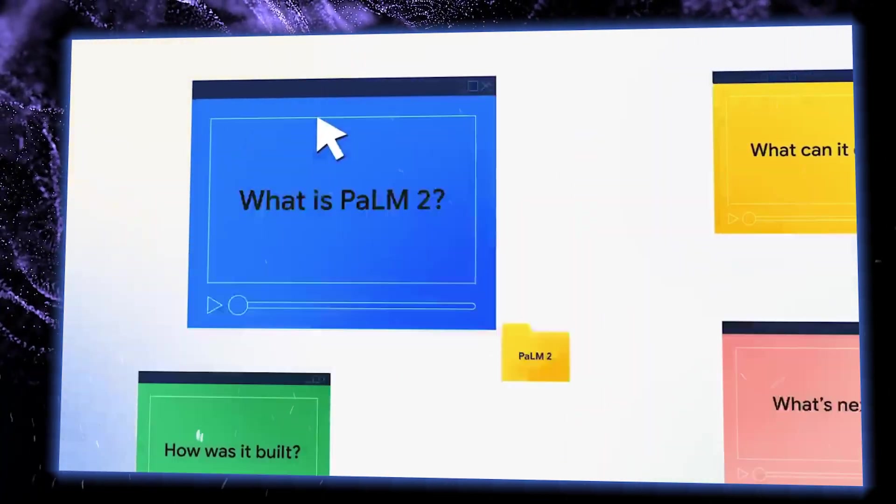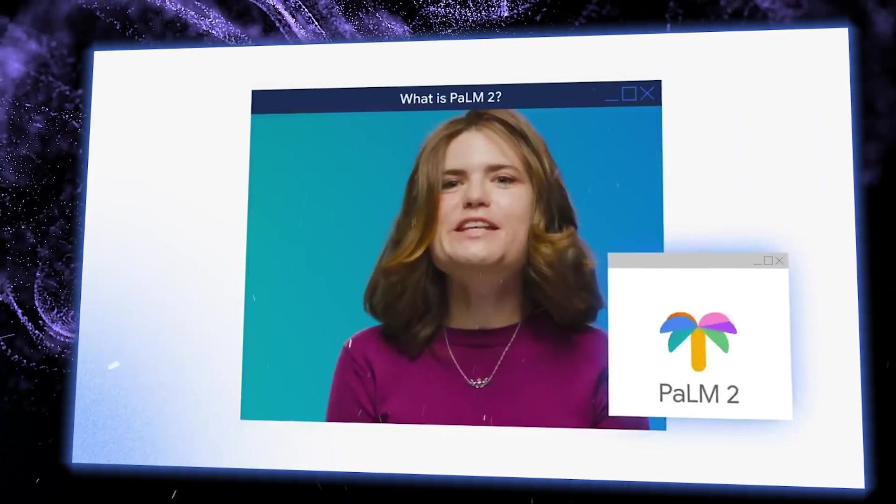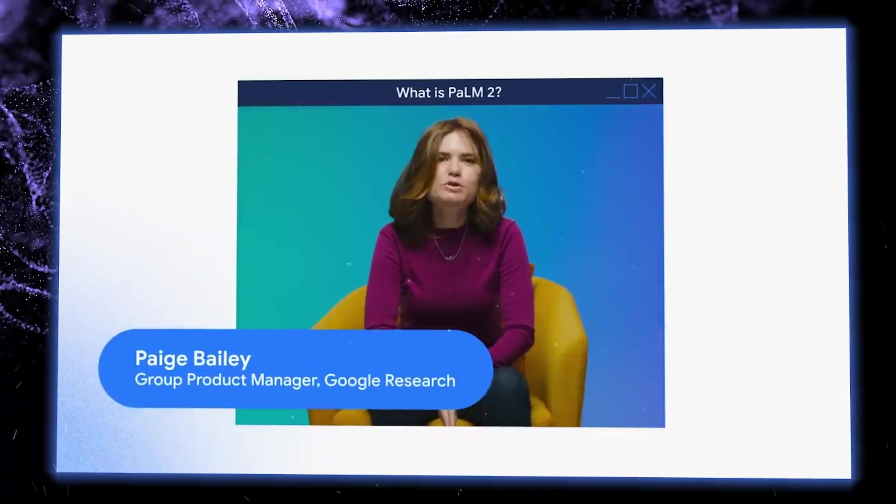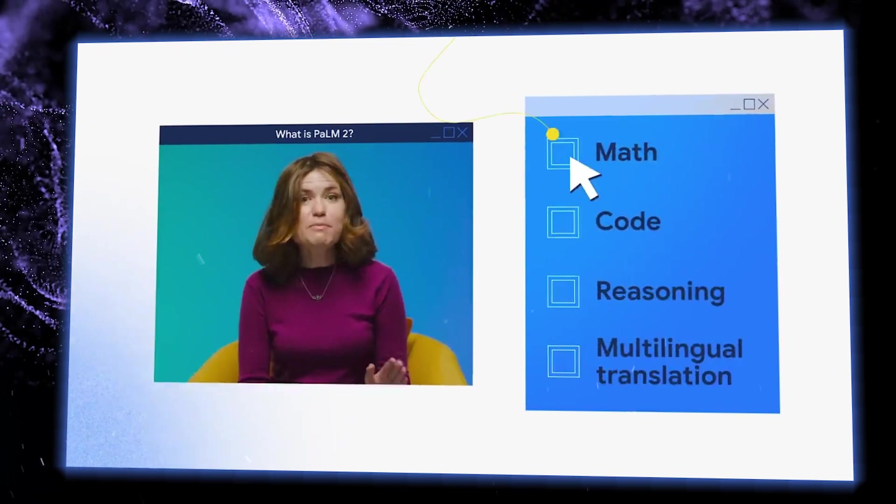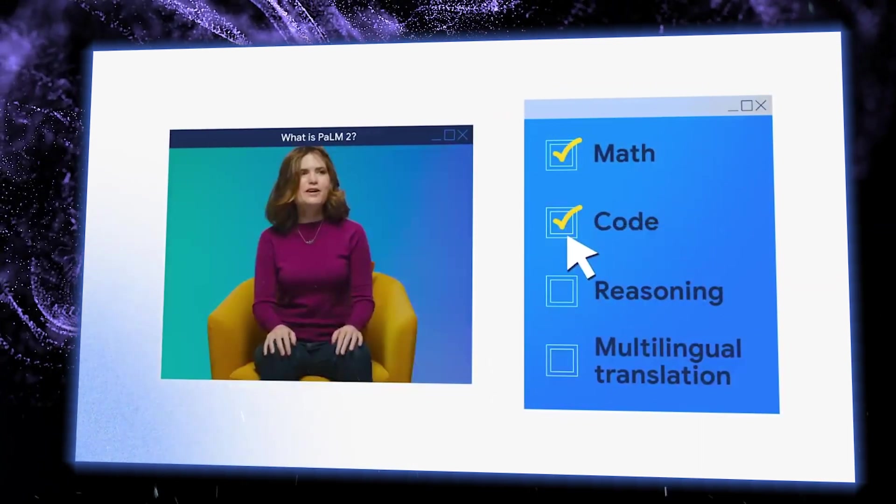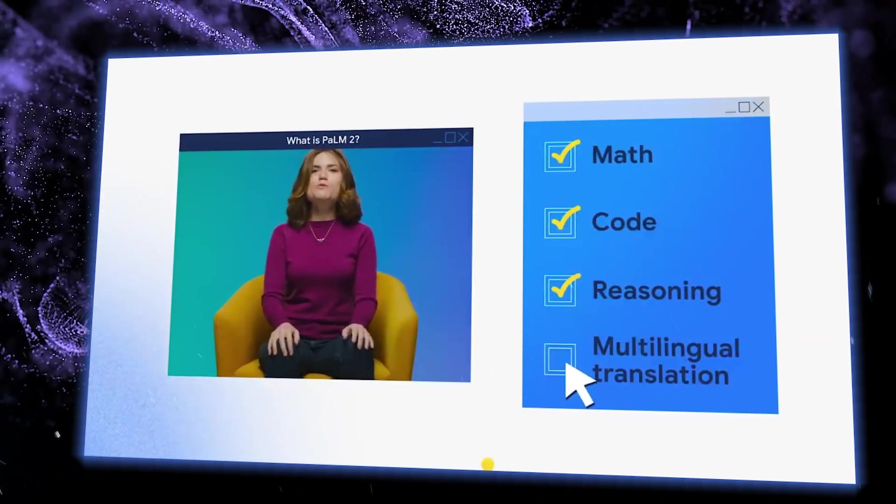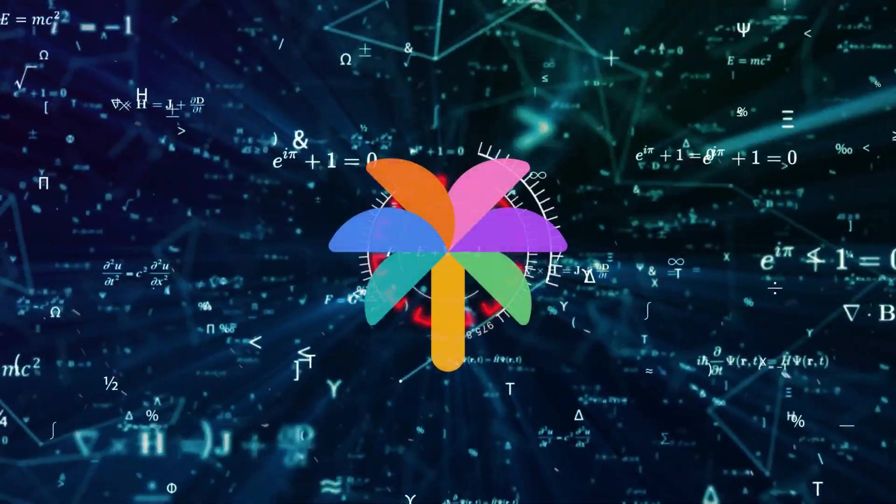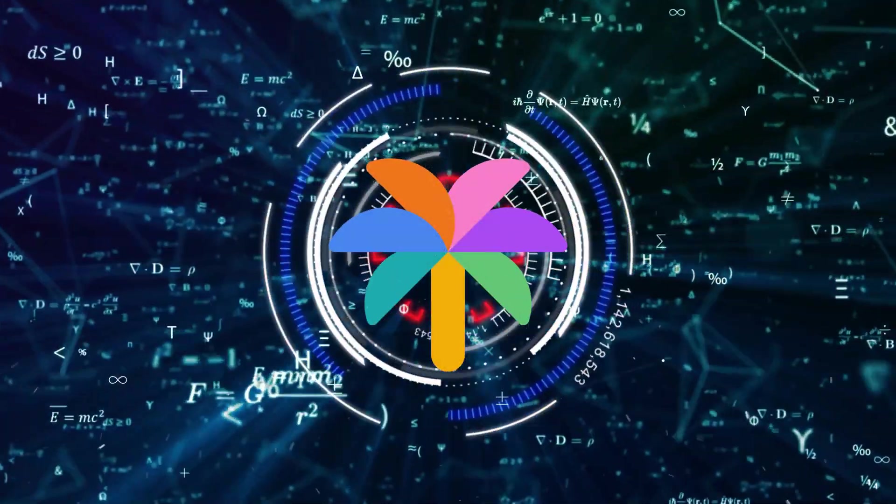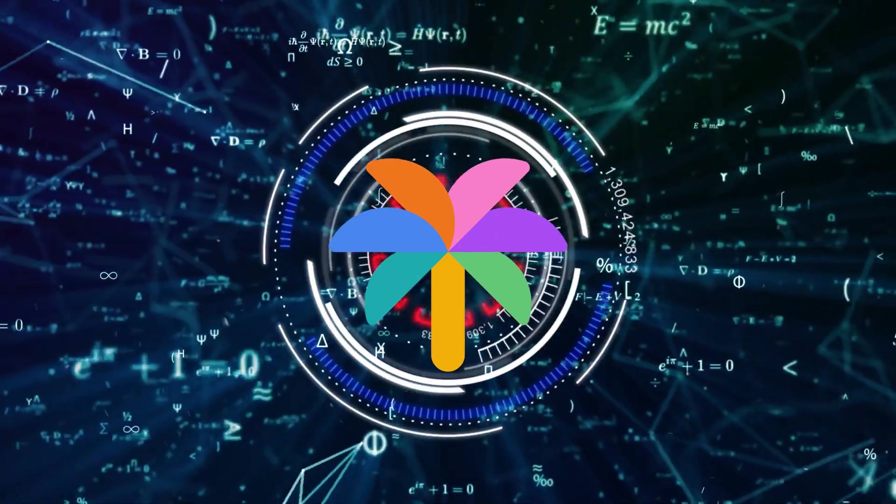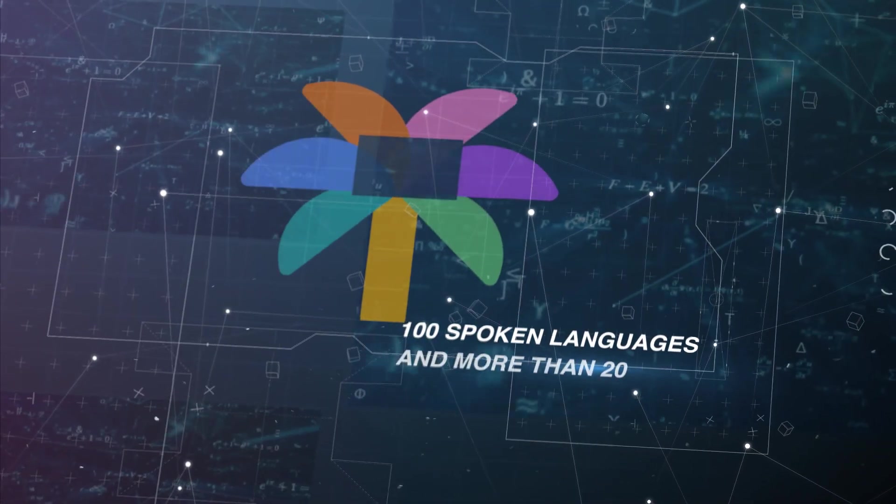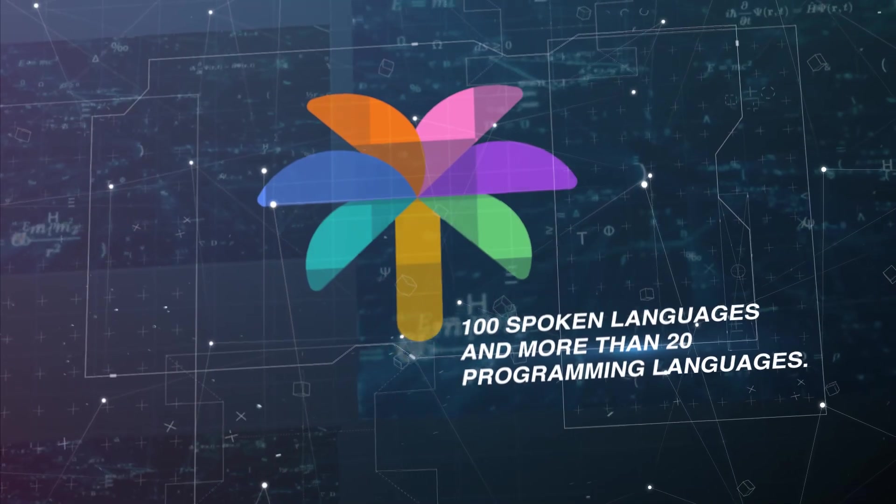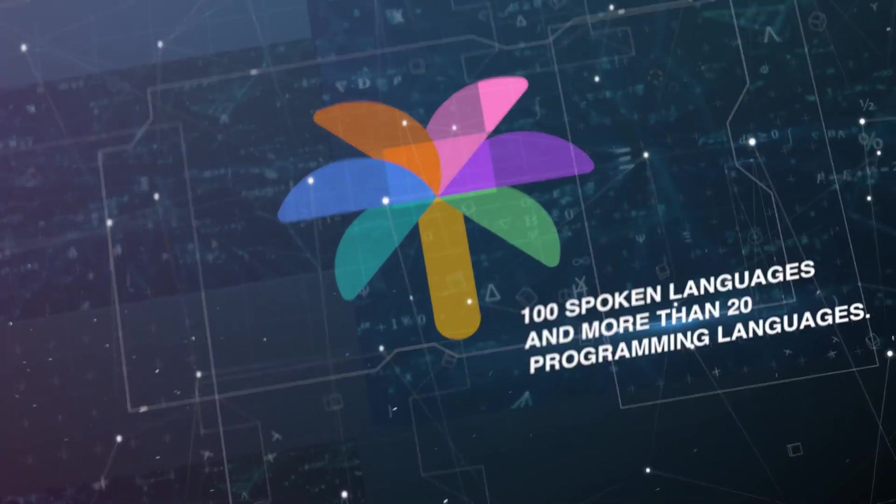PaLM 2 is Google's next generation large language model. It's truly something special. This incredible creation boasts a wide range of abilities, from exceling in math and coding to advanced reasoning and multilingual tasks like translation. The secret to PaLM 2's success lies in its rigorous training on extensive scientific and mathematical data. It's been trained on over 100 spoken languages and more than 20 programming languages.